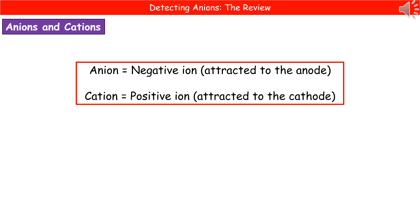Welcome to our review on detecting anions. The first thing we need to consider is what is an anion and what is a cation. Anytime you see the word anion, we're talking about a negative ion — it's called an anion because it's attracted to the anode. The cation is the positive ion because it's attracted to the cathode.